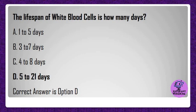The lifespan of white blood cells is how many days? A) 1 to 5 days, B) 3 to 7 days, C) 4 to 8 days, D) 5 to 21 days. Correct answer is option D.